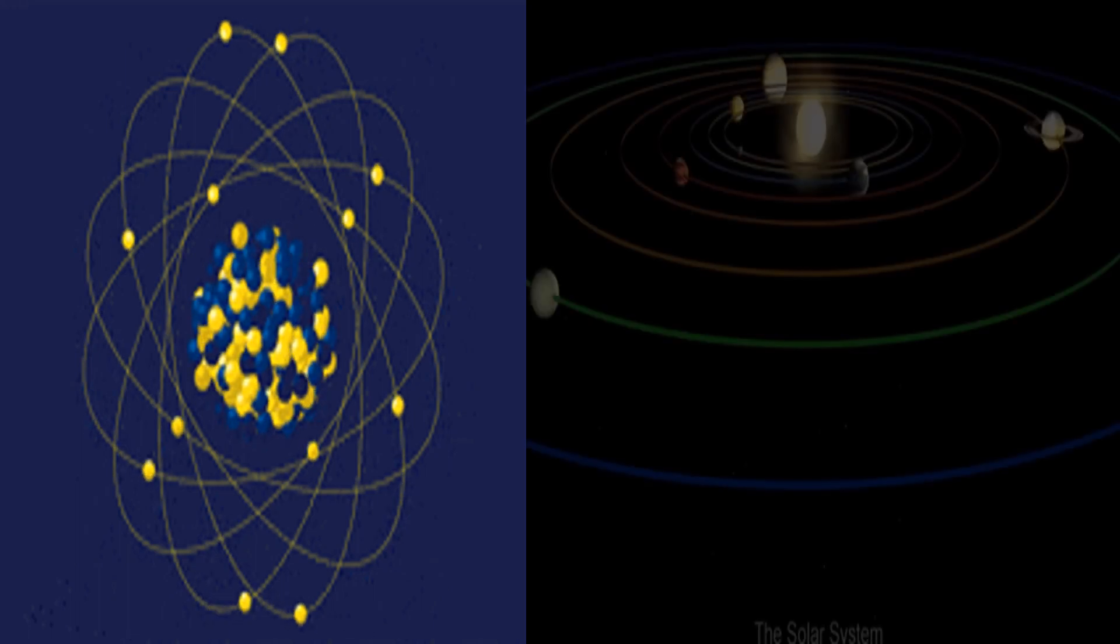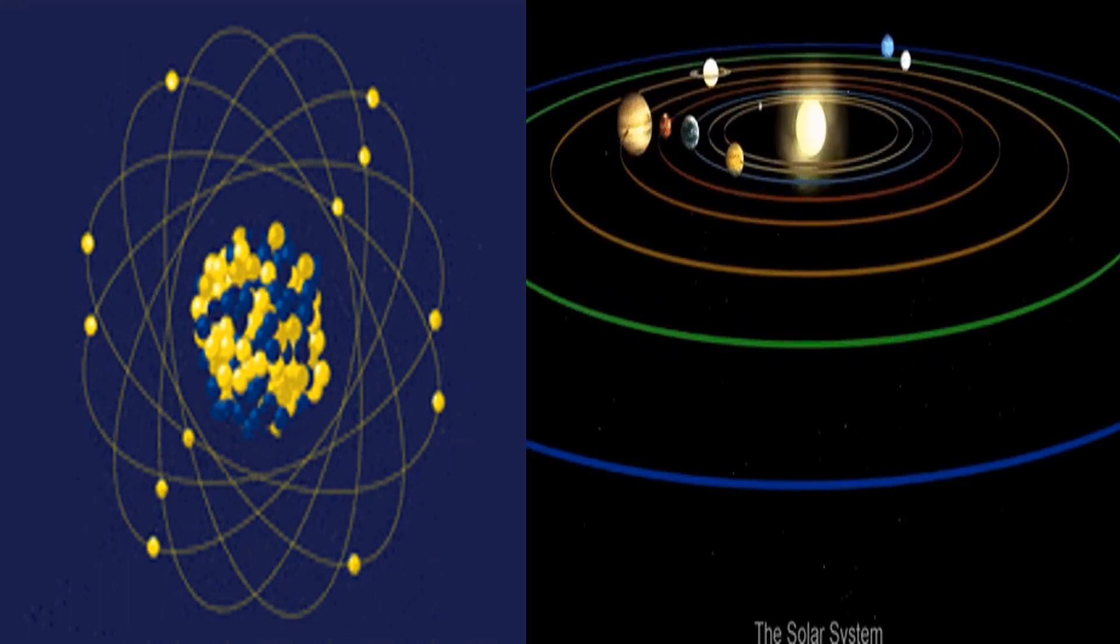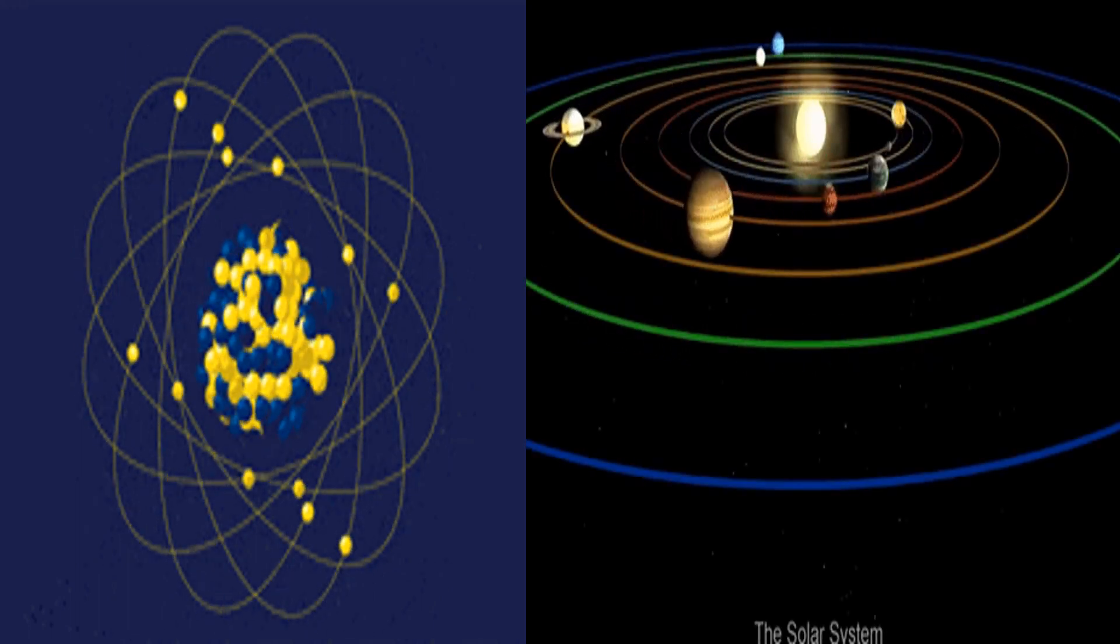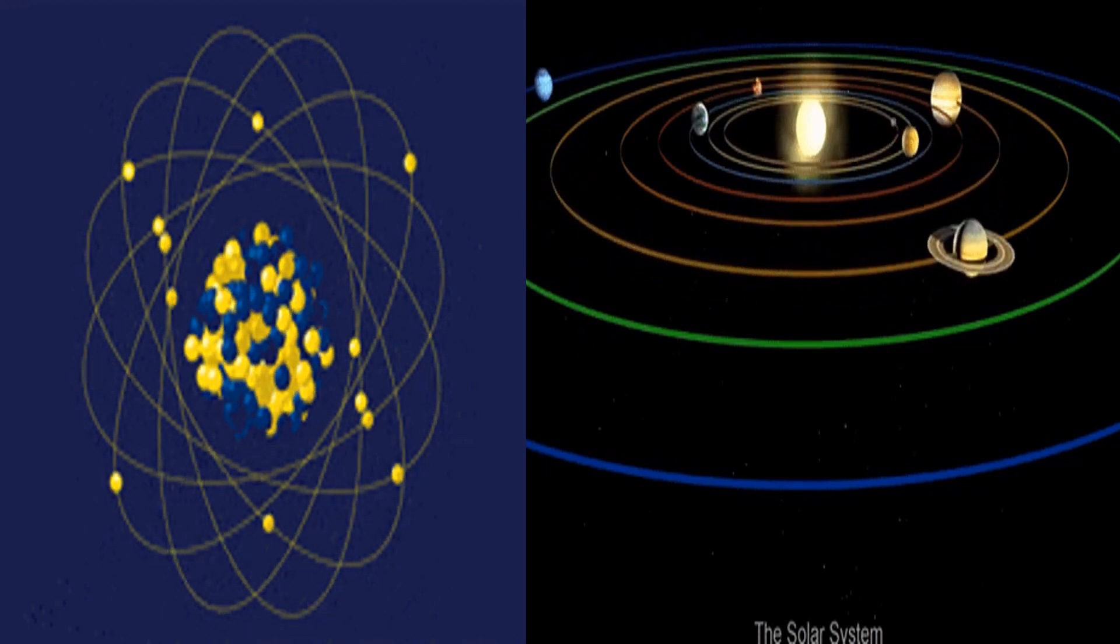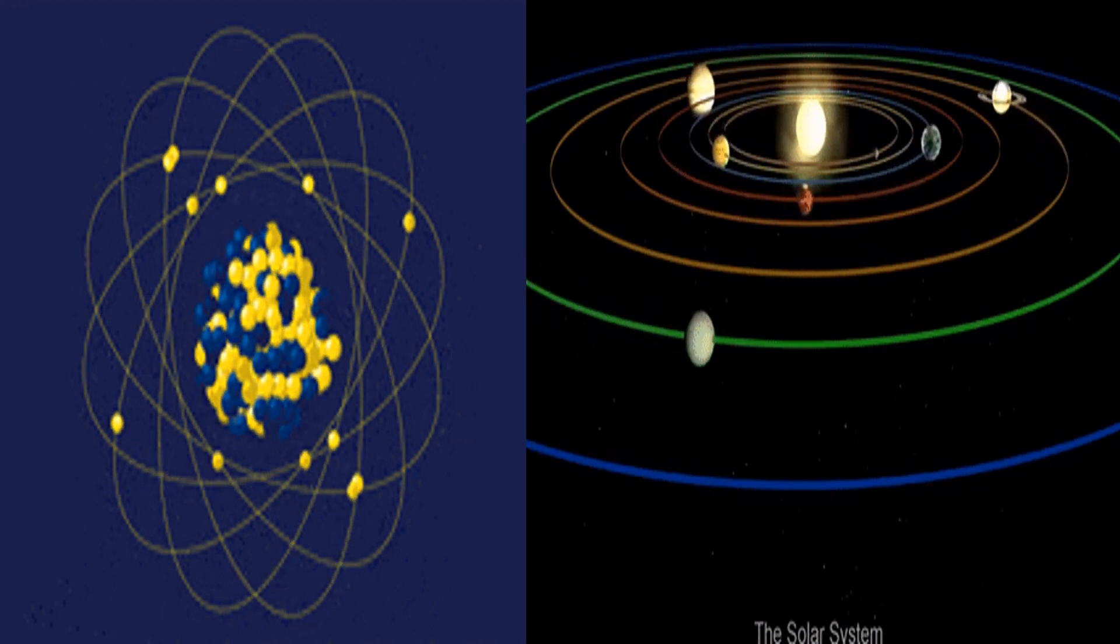If I ask the question, do electrons orbit the nucleus of an atom in the same way planets orbit the star of a solar system, what will you say? Well, those with just basic knowledge of physics will say, yeah, probably.